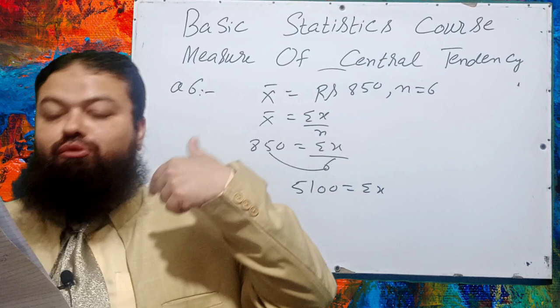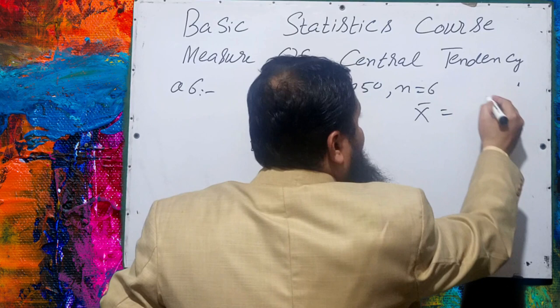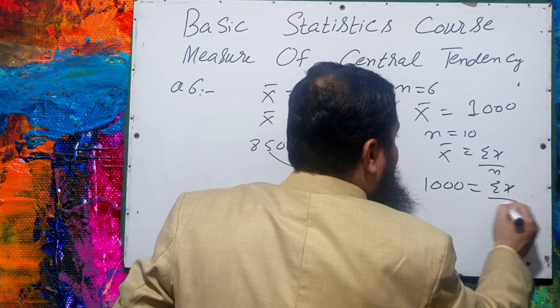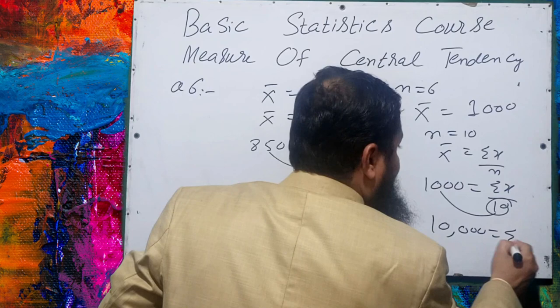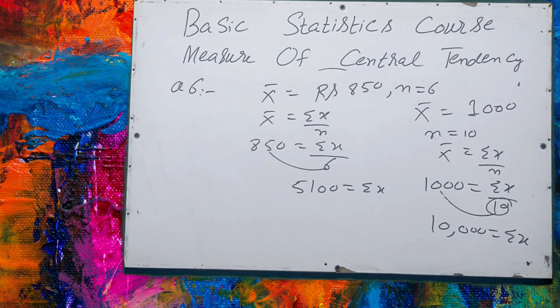What is the mean wage of further 4 workers, if the mean wage of 10 workers is Rs. 1000? First find total summation x for 10 workers: x̄ = summation x / n, so summation x = 1000 × 10 = Rs. 10,000. Now we need to find the mean of the 4 additional workers.